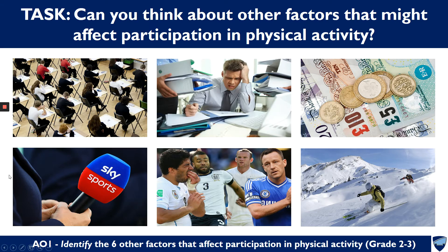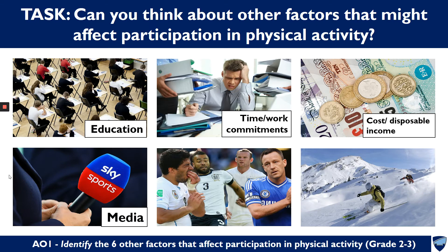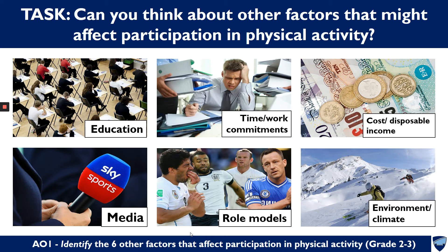So what we've got then — you can check to see if you've got any of these correct. We've got: education, time or work commitments, cost or the disposable income that somebody has, media, role models — those four footballers are arguably not good examples of good role models, but that's why I've got that image there to represent role models — and then environment and climate.